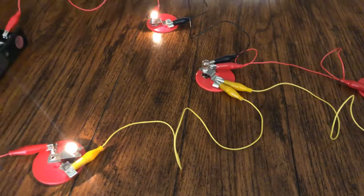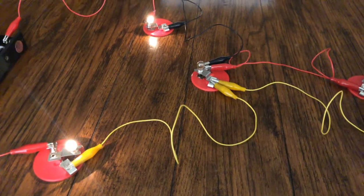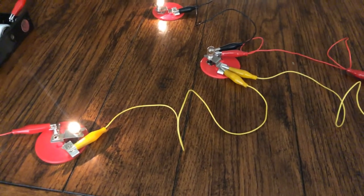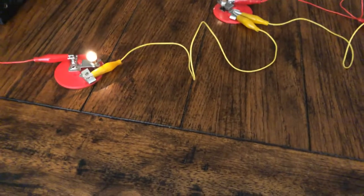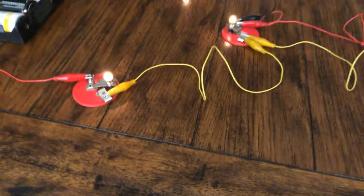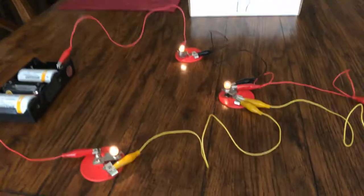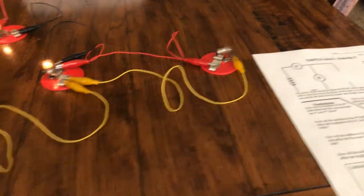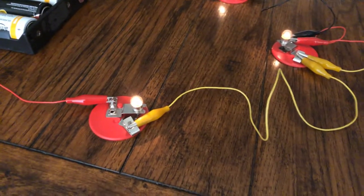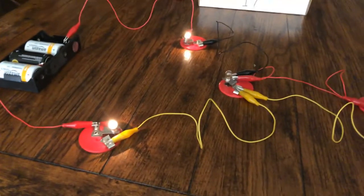So what we've observed here then is that the brightness of bulbs one, two, and three before adding this bulb—the brightness is all the same and it's kind of like a medium brightness, and four is obviously out.